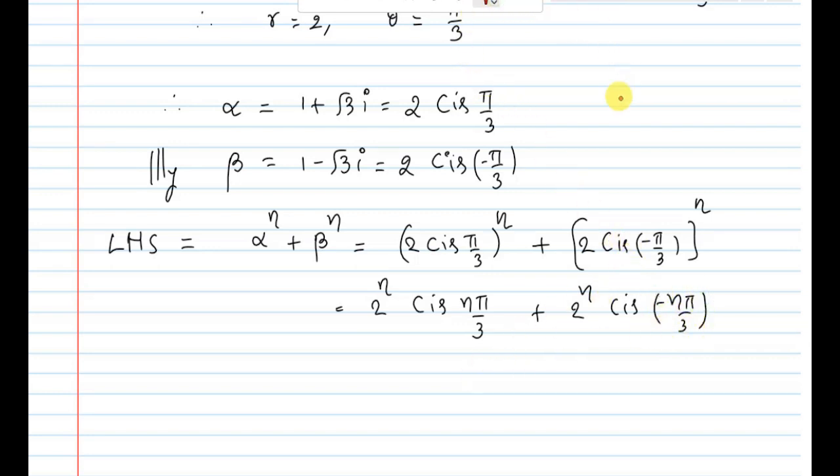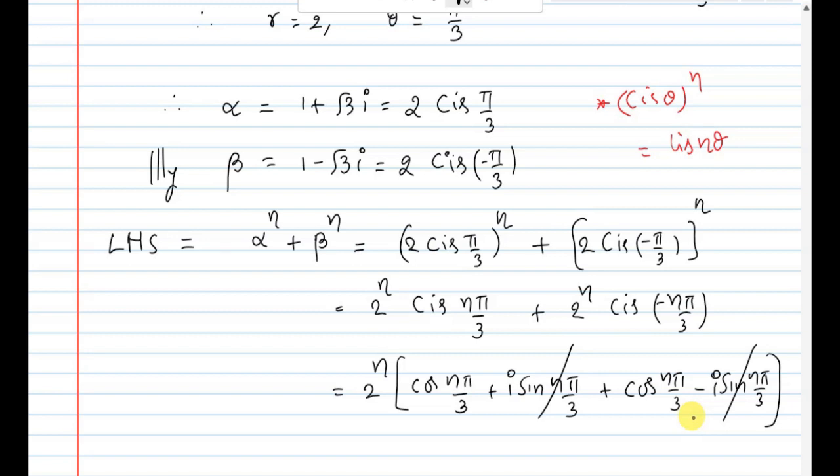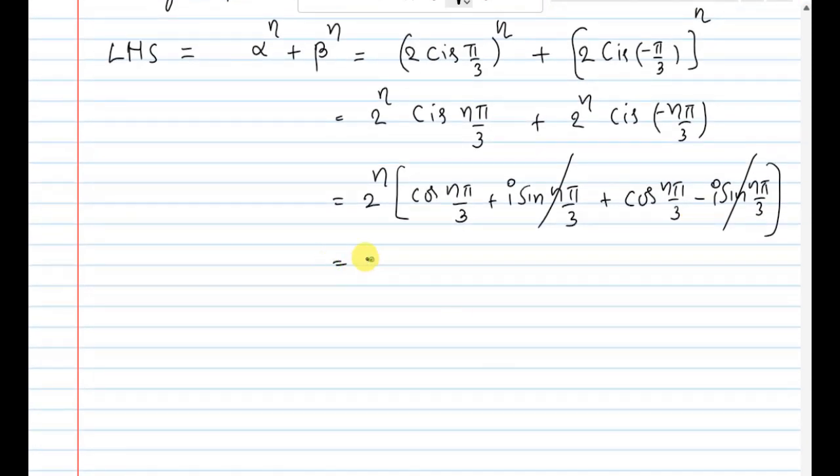Cis theta whole power n becomes cis n theta. So 2 to the power n times: cis n pi by 3 is cos n pi by 3 plus i sin n pi by 3, plus cis minus n pi by 3 is cos n pi by 3 minus i sin n pi by 3. i sin terms get cancelled. That equals 2 to the power n times 2 cos n pi by 3.